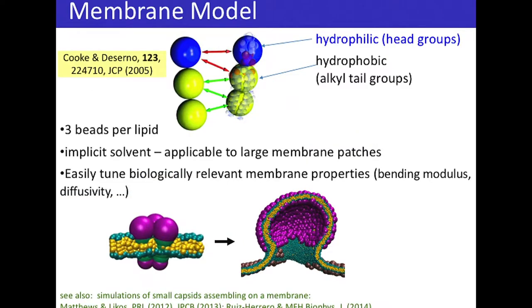We also need a membrane model that we can simulate on long time scales. We're using the Cooke–Deserno model with three beads per lipid — one head group and two hydrophobic tail beads — with tunable interactions to capture properties of different biological bilayers. Glycoproteins span this membrane, and we simulate dynamics using Brownian dynamics. We also ran simulations including all long-range hydrodynamic interactions and see qualitatively the same behavior.